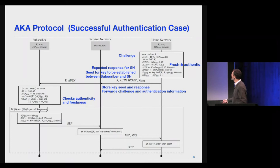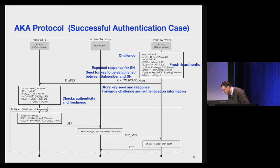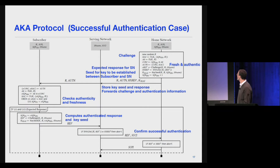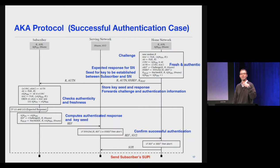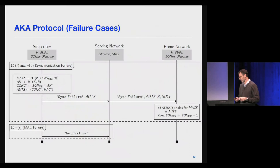If both checks succeed, the subscriber updates its sequence number, computes a response, and computes the key seed. The response is sent to the serving network, which checks its legitimacy and forwards it to the home network. If everything succeeds, the home network sends the SUPI to the serving network, so the serving network now knows which subscriber it's actually talking to — useful for billing and other functions.